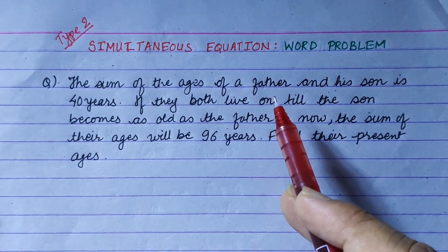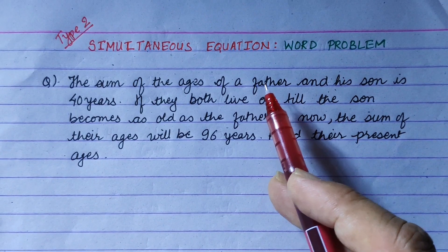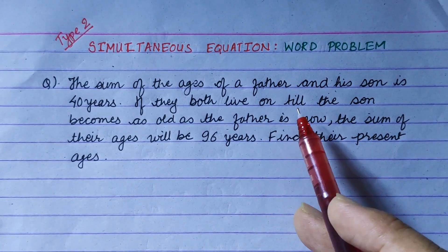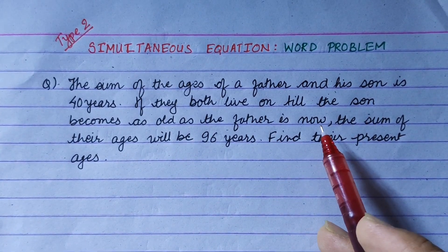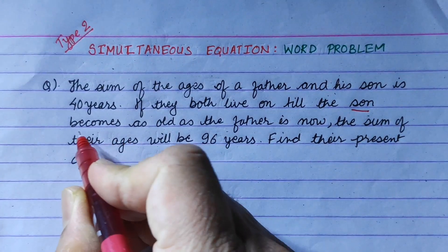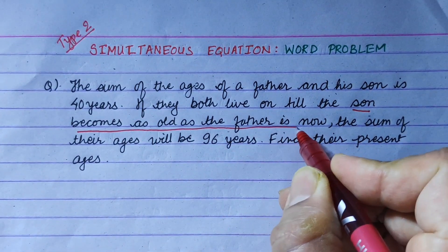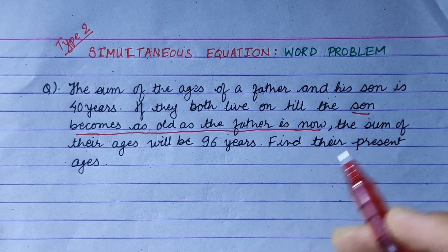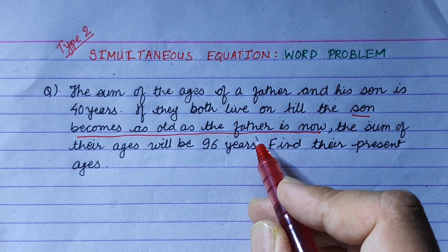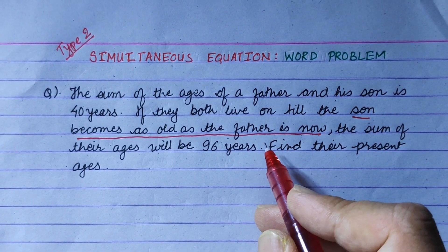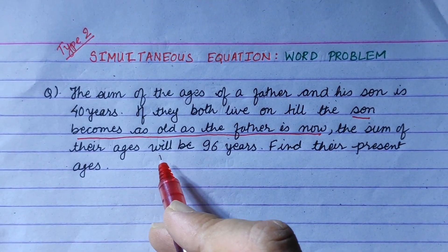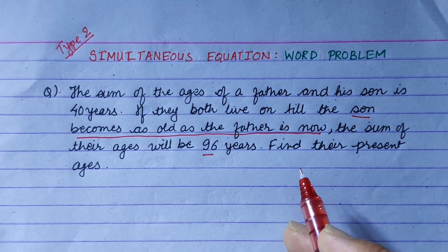The sum of the ages of father and his son is 40 years. Buaa ra chora ko umeer ko sum 40 years chha. If they both live until the son becomes as old as the father is now — jaba son becomes as old as the father is now — the sum of their ages will be 96 years. Find their present ages.